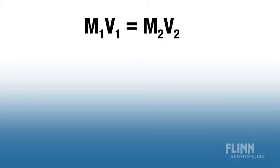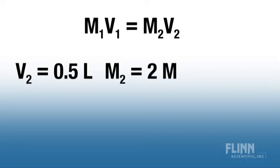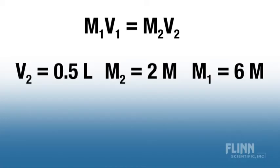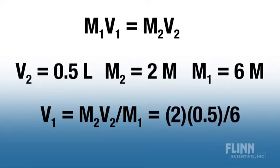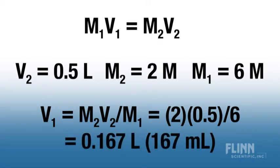In this example, I want to prepare 500 milliliters of 2 molar hydrochloric acid, and my starting material is 6 molar HCl. Solving for V₁ gives V₁ = M₂V₂/M₁ = (2)(0.5)/6 = 0.167 liters. So I will need 167 milliliters of my starting material.